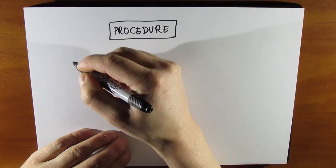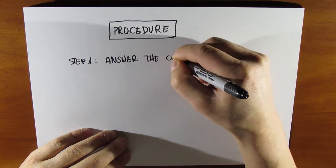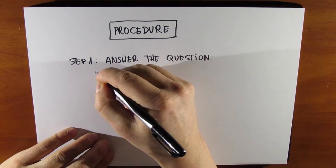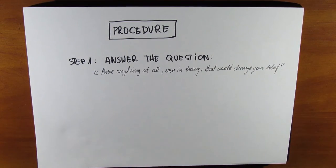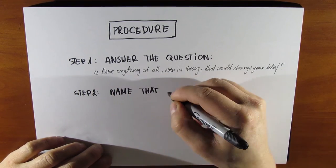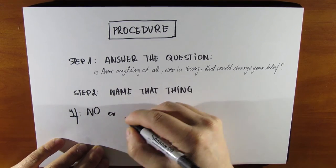Now there is a very easy way to determine in which camp you belong to, by following this simple two-step procedure. First, answer the question, is there anything at all, even in theory, that would change my belief? And the second, name that thing.